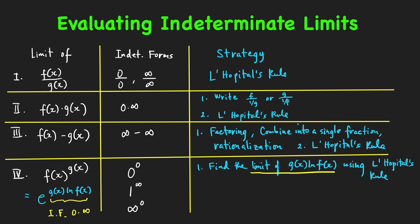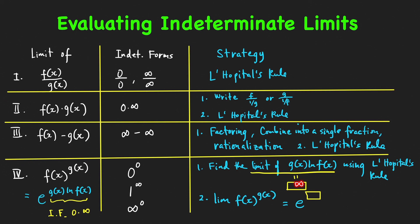If the limit of g(x)·ln(f(x)) equals some value — call it L — then the limit of f(x)^g(x) equals e raised to L. For example, if that limit is 5, the answer is e⁵. If the limit is negative infinity, the answer is e^(−∞) = 0. If the limit is positive infinity, the answer is e^∞ = infinity.